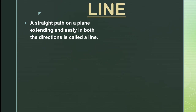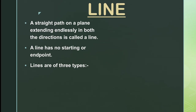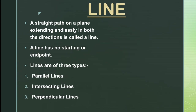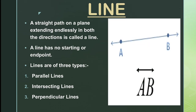Next comes line. A straight path on a plane extending endlessly in both directions is called a line. A line has no starting or end point. Lines are of three types: parallel lines, intersecting lines, and perpendicular lines. As you can see in the figure, AB is a line. It is represented with two capital letters of the English alphabet with a double-headed arrow mark on their top.